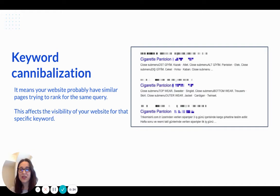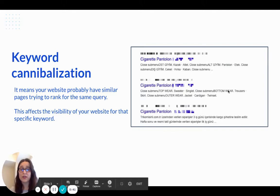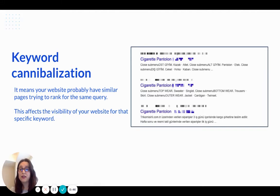You may ask what keyword cannibalization is — it means your website probably has similar pages trying to rank for the same query, just like this Turkish website trying to get ranked for cigarette pens with different pages. This affects the visibility of your website for that specific keyword and you need to solve this problem. Today I'm going to show you three tricks to detect them for free.